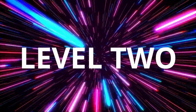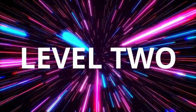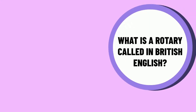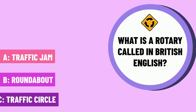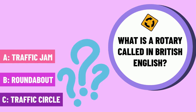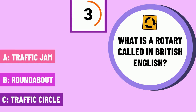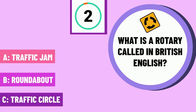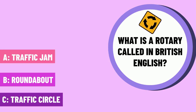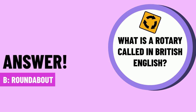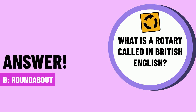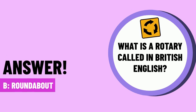Level 2. Question 6 — what is a rotary called in British English? The correct answer is B — roundabout.